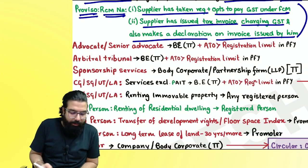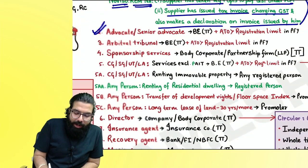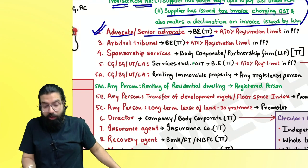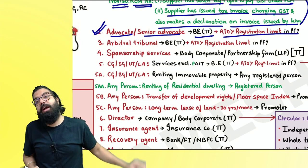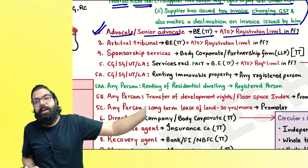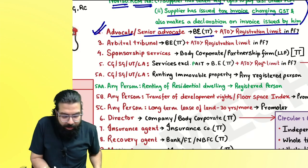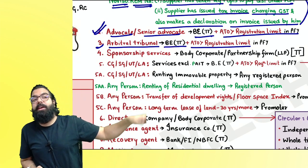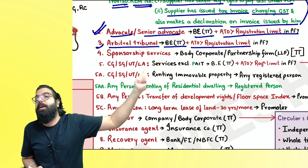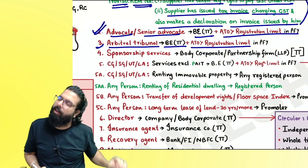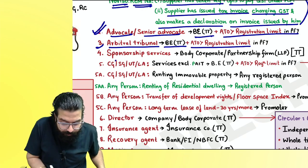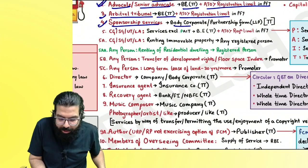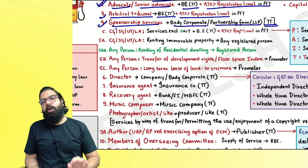If an advocate or senior advocate provides services to a business entity whose last year's turnover is greater than the registration limit, RCM applies; otherwise it is exempt. If an arbitral tribunal provides services to a business entity whose last year's turnover is more than the registration limit, RCM applies; otherwise exempt. Sponsorship services provided to a body corporate or partnership firm in the taxable territory — RCM applies.